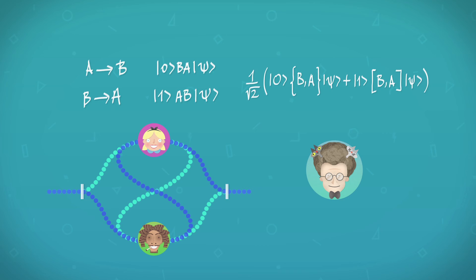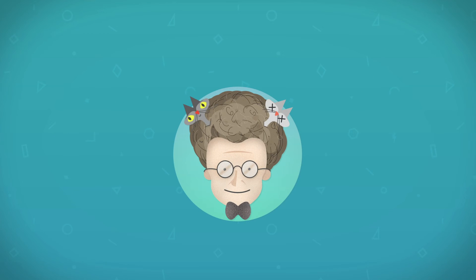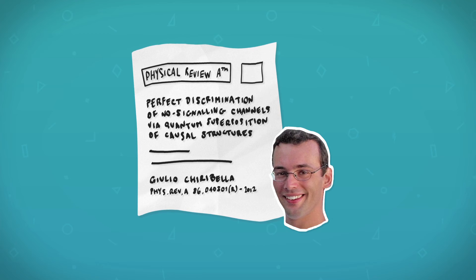So the interference tells us whether the operations commute or anti-commute. And even better, Kiri Bella has shown that it is not possible to tell this if the causal order is definite, so it is actually useful to superpose the two causal orders.